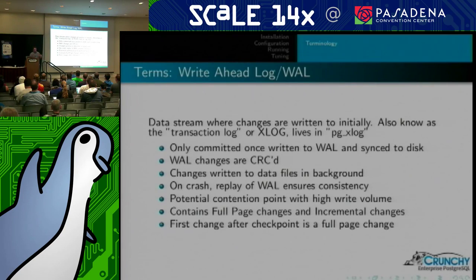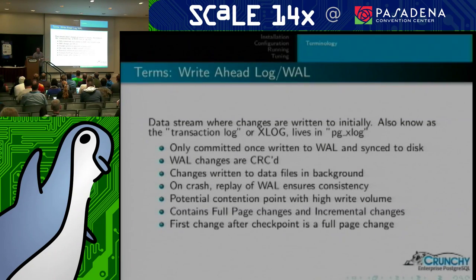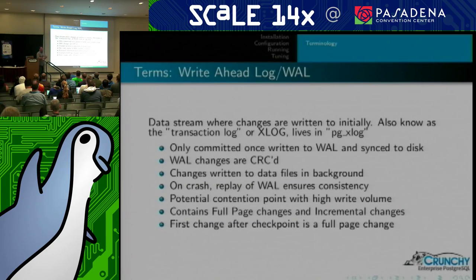After a crash, because Postgres has written everything into the write-ahead log first, when it starts back up it looks for the last checkpoint — that's the point where everything pending in the WAL had been written out to the heap files and synced. Everything after that checkpoint gets replayed when the database starts back up. When the database starts, we read through the write-ahead log and write all those changes out to the heap files, because we can't trust they were there since we didn't f-sync them ourselves.